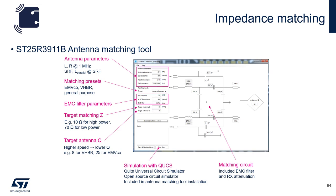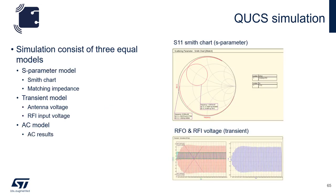From here, we would save and simulate the circuit, which brings up QUX, a simulation program. The QUX simulation will produce three models: an S-parameter model, which provides the Smith chart and the matching impedance; a transient model, which produces the antenna voltage and the RFI input voltage; and an AC model, which gives you AC results. It's important to note that the circuit calculator does not always calculate standard capacitive values, so if that's the case, you have to go into the QUX simulation, change those to standard values, and then re-simulate.